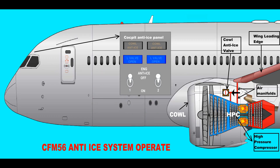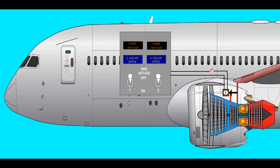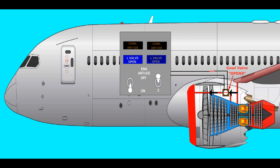Pneumatic systems are anti-ice systems widely used in gas turbine engines of military and commercial aircraft. Anti-ice systems usually take the hot air necessary for their operation from the last stages of the engine compressor. The hot air taken is directed to the leading edges of the wing, flight control surfaces, engine front parts, and other areas to prevent icing before it occurs.